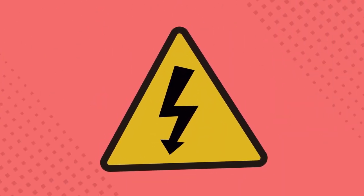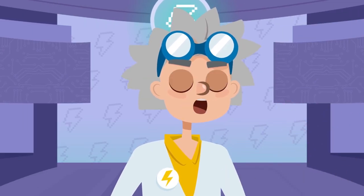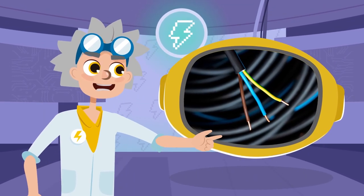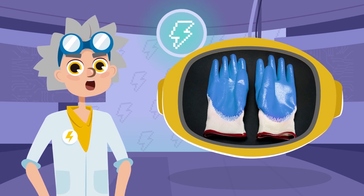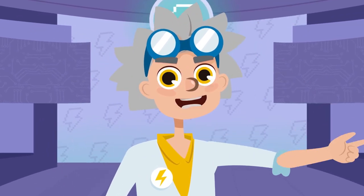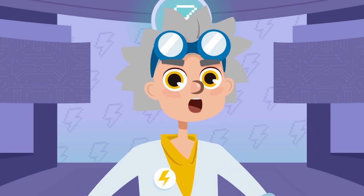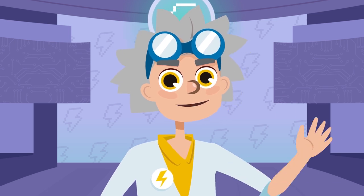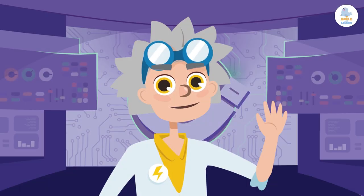As you know, electricity can be very dangerous, so insulating materials are used to protect us from it. For example, the outside of wires are made of plastic and electricians' gloves are made of rubber. Well, I think that's it, friends! I hope you had fun and at the same time learned a lot of interesting things about electricity. See you soon!